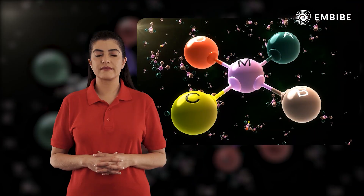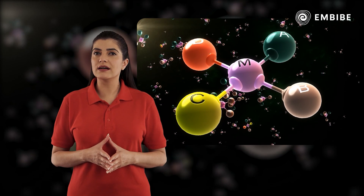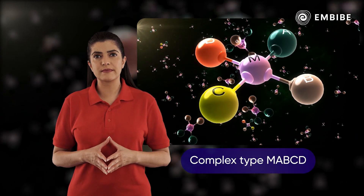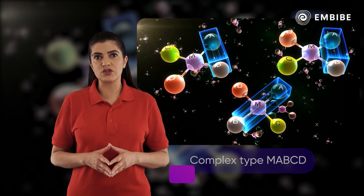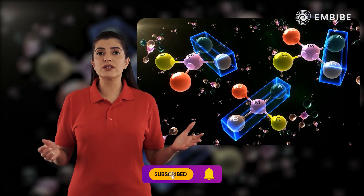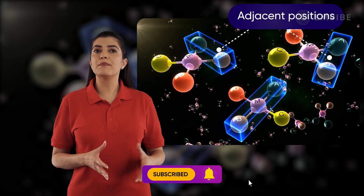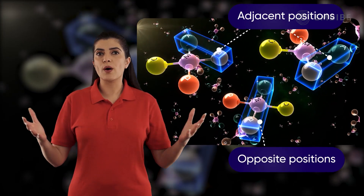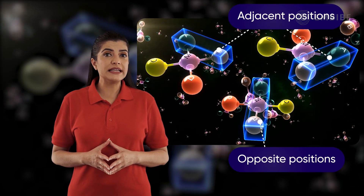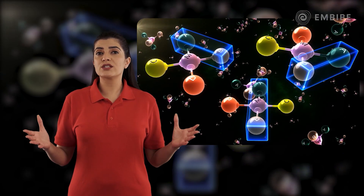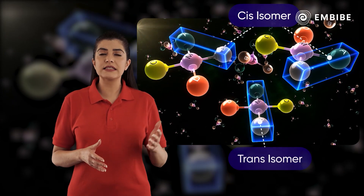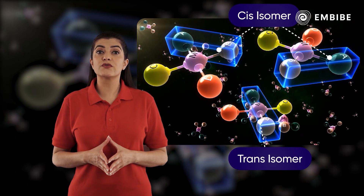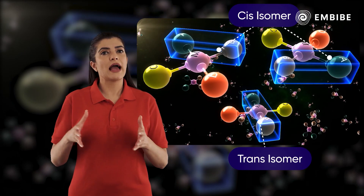Another square planar complex is of the type mabcd. It has three possible orientations. In two of these orientations, ligands a and b are placed adjacent to each other, and in the third one they are placed opposite to each other. Accordingly, these isomers are designated as cis and trans. There are three possible isomers for this compound — two cis and one trans.